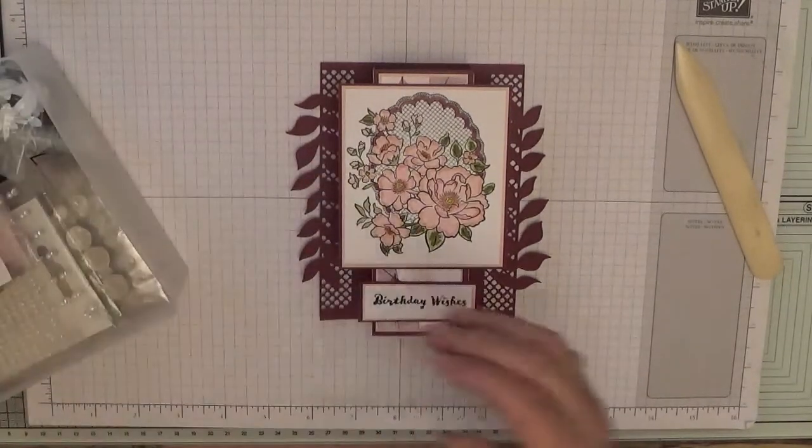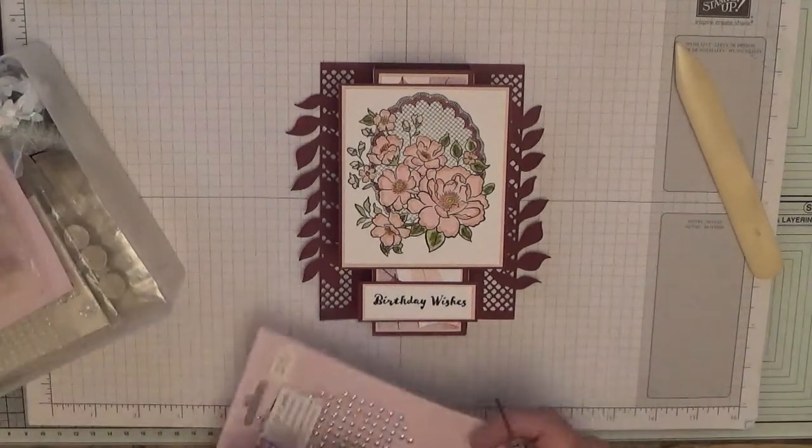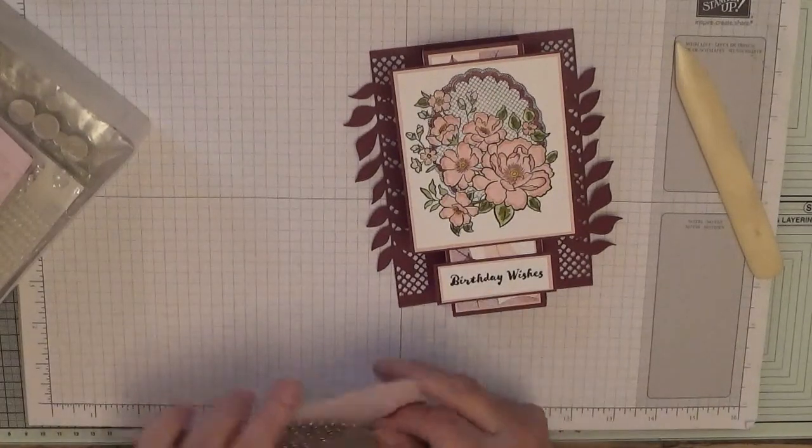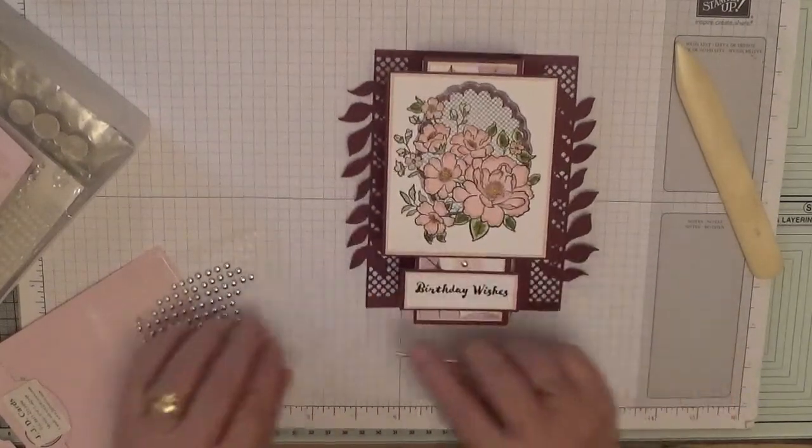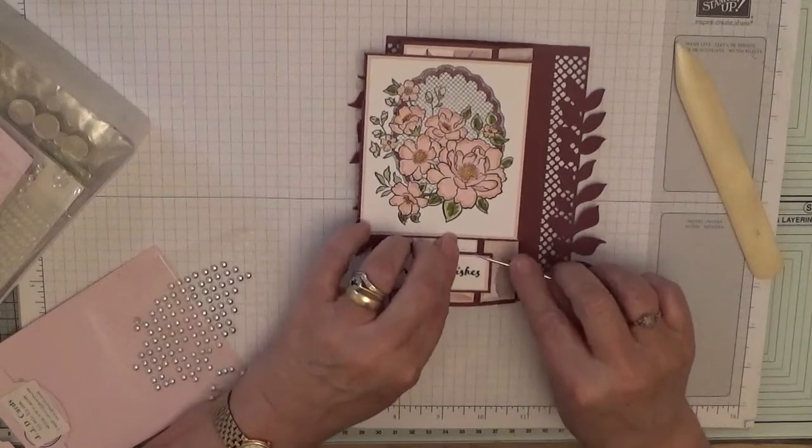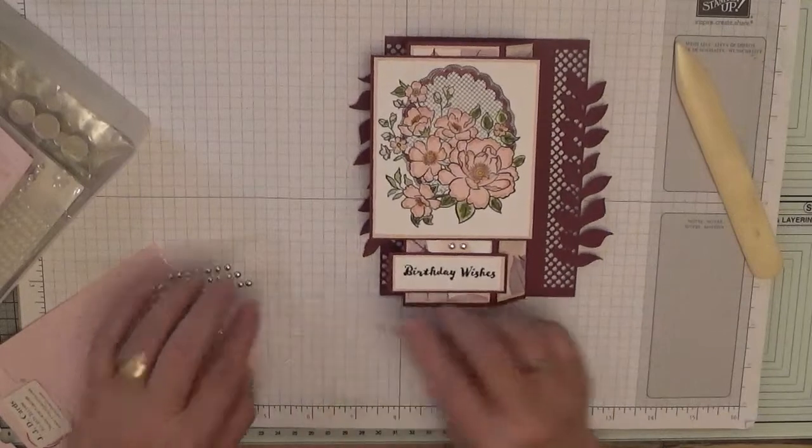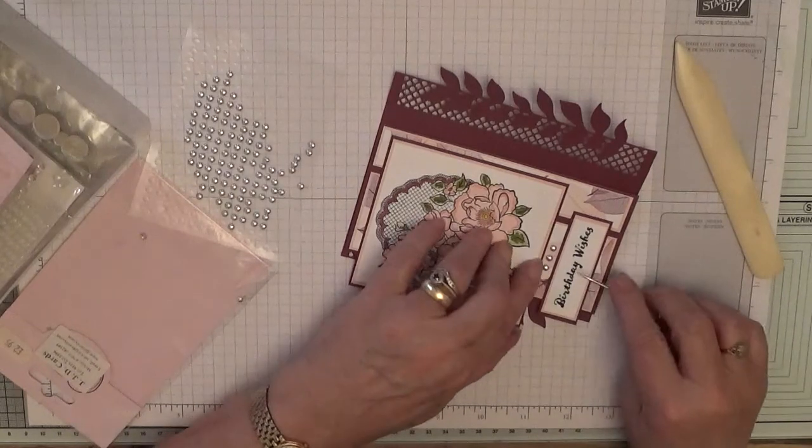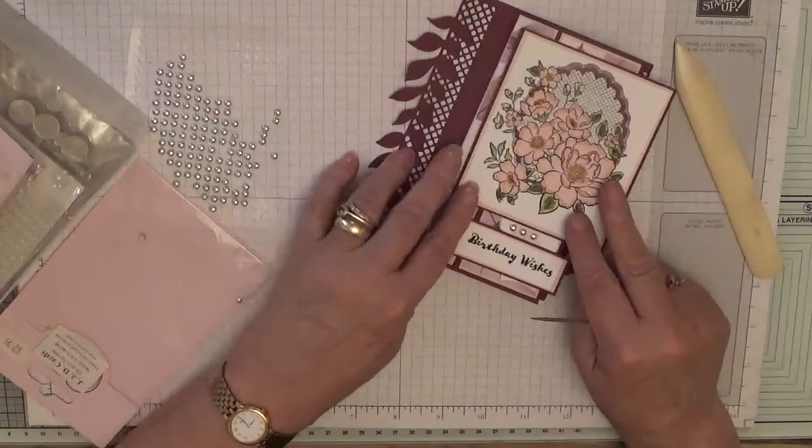Then all we need is some gems. Now I put on these silver button gems that I've got - one right in the middle, one right in the middle, and one either side. That's it, that's all the gems I put on.